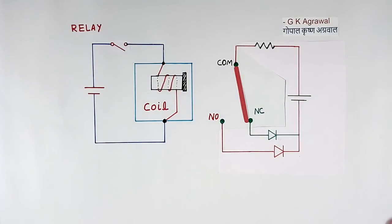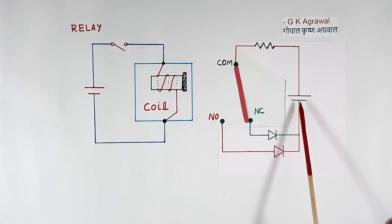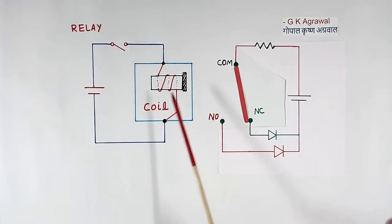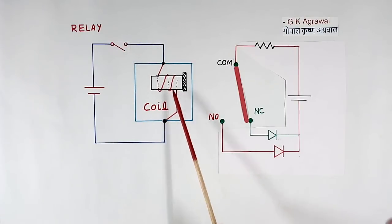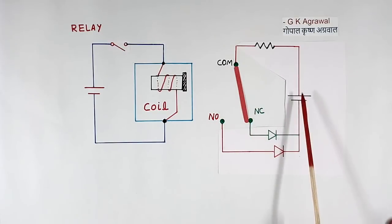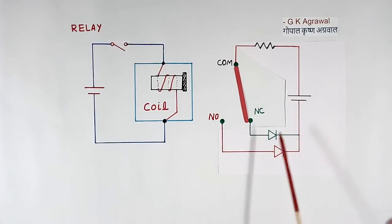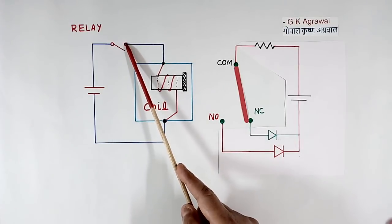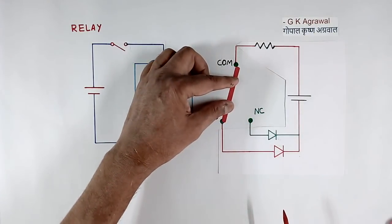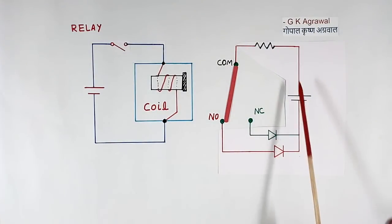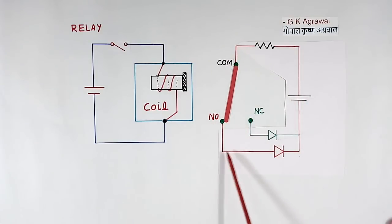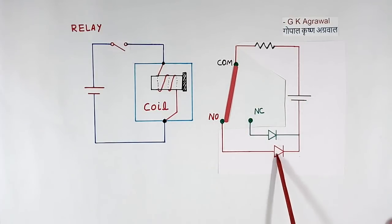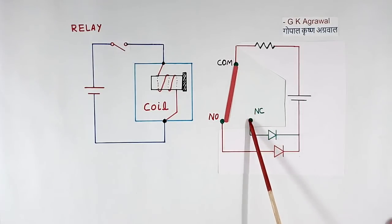Here we have another circuit. When the switch is open and current is not flowing to the coil, the NC contact will be closed, so current flows through the NC path and this LED will be ON. But when we close the switch, the coil energizes and the contact moves to the NO position. Now the NC path is broken, so the LED will turn OFF.